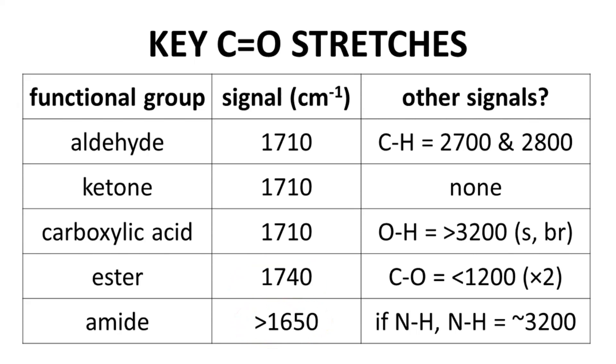You might see a challenge here. If you have a nice strong absorbance at 1710 wave numbers, you might know you have a carbonyl, but how do you know if you have an aldehyde, ketone, or carboxylic acid? As it turns out, this is fairly easy because these functional groups have other features.